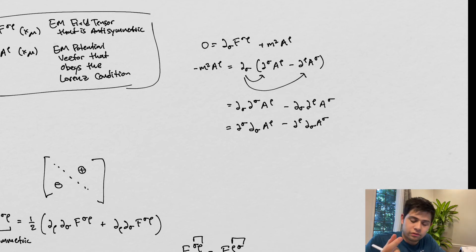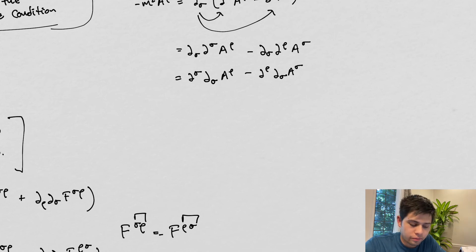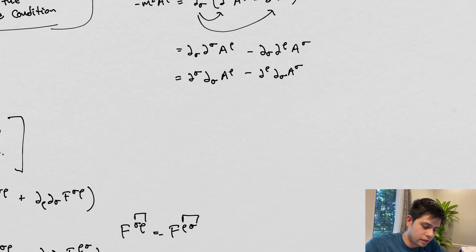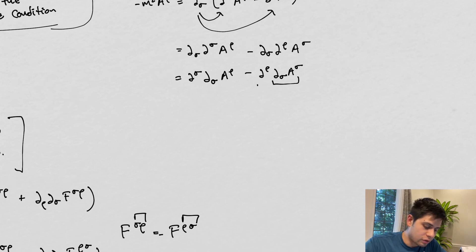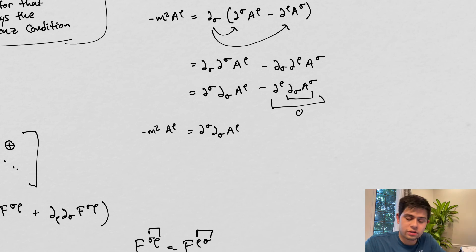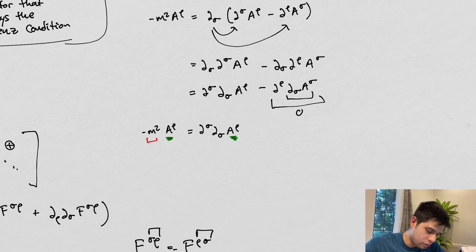We can interchange the derivatives because when we're talking about vectors as functions in this case, the partial derivatives commute — unlike matrices. By doing that, we find that ∂_ρ ∂_σ A^σ is just ∂_ρ times a constant, because ∂_σ A^σ = 0 is our Lorentz condition. So the derivative of that constant goes to zero. This means we're left with −∂_σ ∂^σ A_ρ = m² A_ρ, where m plays the role of this eigenvalue-like constant.